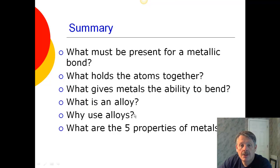So, in summary, what must be present for a metallic bond? You must have at least one metal, and typically it's multiple metals, and they're stuck together. What holds the atoms together? Well, it's that sea of electrons that holds the atoms all together. And because those sea of electrons can shield the positives, the protons, from each other, they can move, and so that gives it the ability to bend.